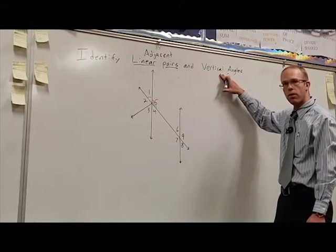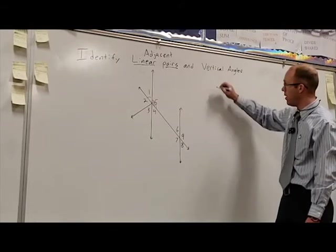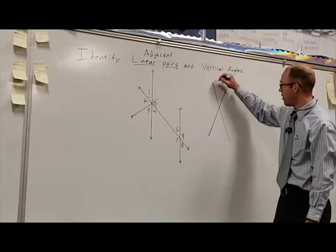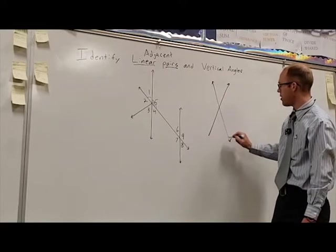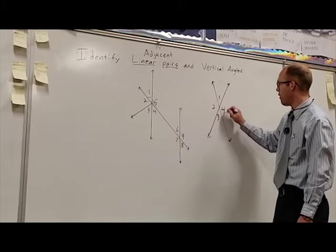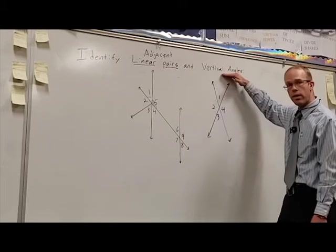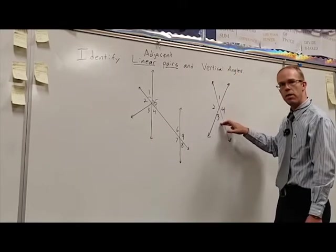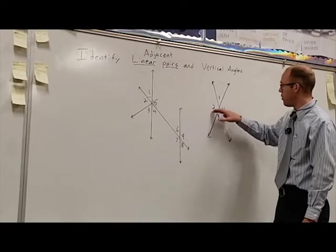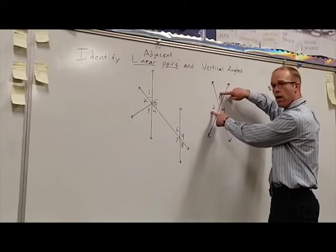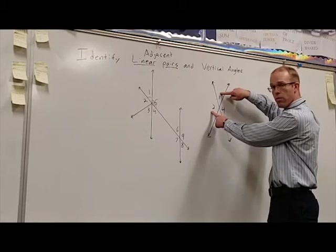This next one is called vertical angles. Now vertical angles are created when two straight lines cross each other. You'll notice that when we have that intersection, we have four angles. One, two, three, and four. Vertical angles are pairs that are opposite each other. So one and three would be vertical angles. Two and four would be vertical angles. One and two are not vertical angles because they're not across from each other.